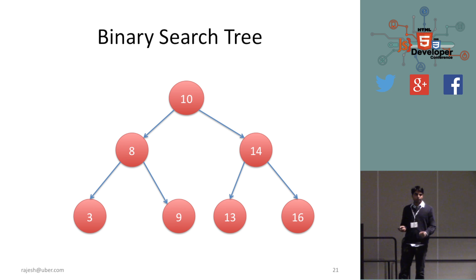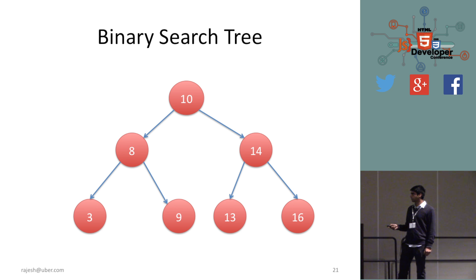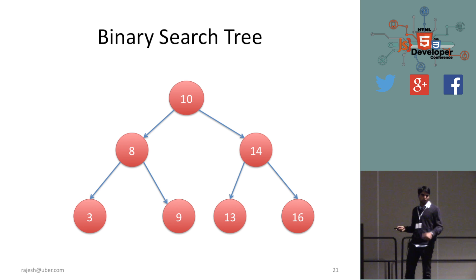With this property you get a lot of extra power. For example, to search for 13: you go to the root (10), see that 13 is greater so it must be on the right. You go to 14, see that 14 is more than 13 so it must be on the left. You go to 13 and confirm it's present — just three steps. That's exactly log n, and that's the beauty of the binary search tree.